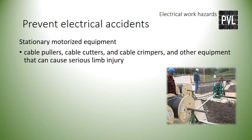Stationary motorized equipment can cause serious injury. Electrical workers use motorized cable pullers, cable cutters, and cable crimpers and other equipment that can cause serious limb injury. Users of these equipment should always be trained on their safe use and read their respective owner's manual. Equipment guards should be installed and kept in place while in use — never remove a guard for convenience or to speed up the process. Clean guards as needed to allow for visibility, but only when the equipment is de-energized.